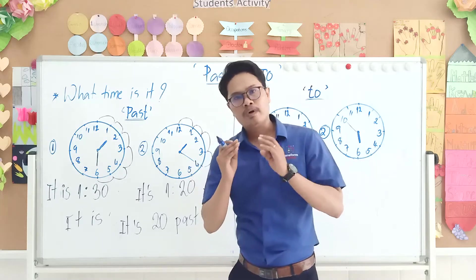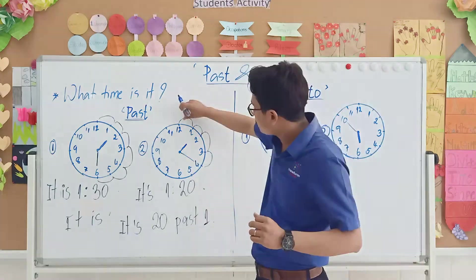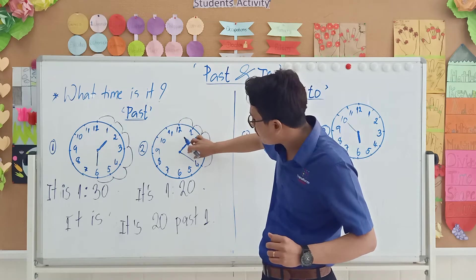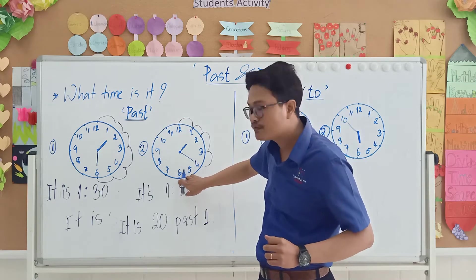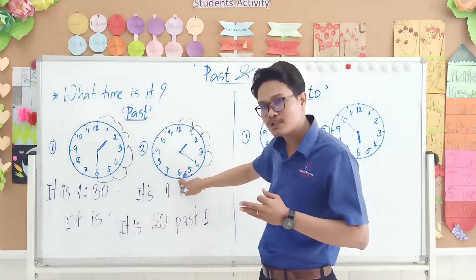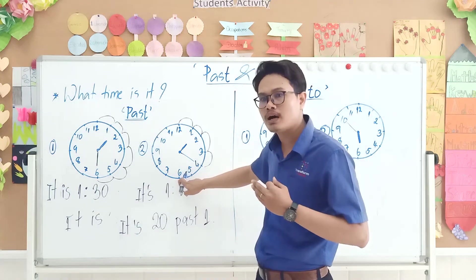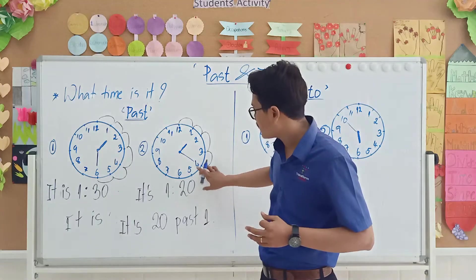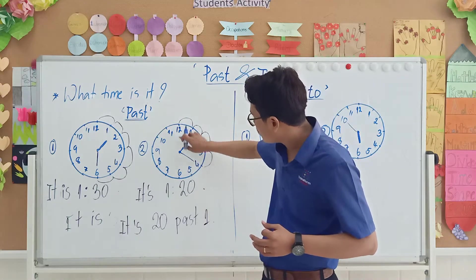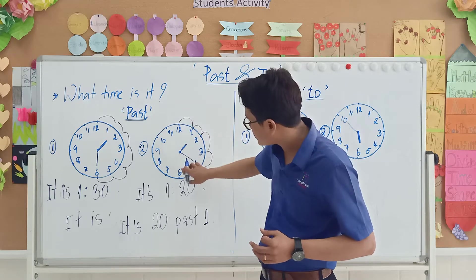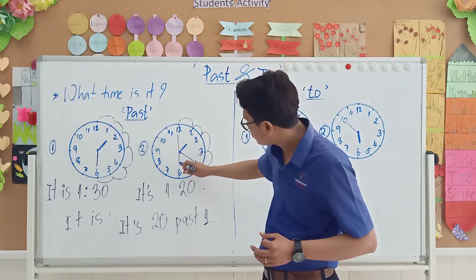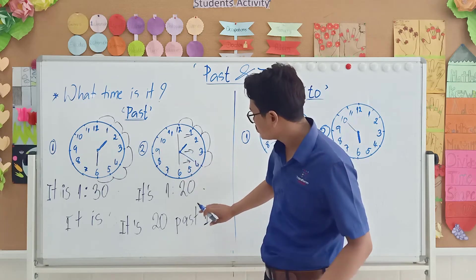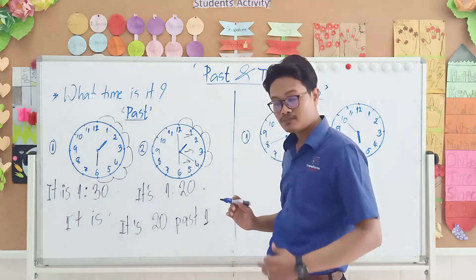I want to tell you why we use past. From here, when the long hand moves from 12 to number 6, from 12 to 1, 2, 3, 4, 5, we use past. When you see the long hand from 12 to 6 here, from here to here, we use past.